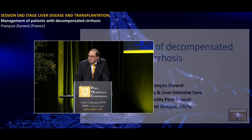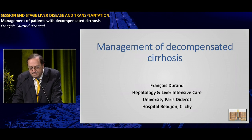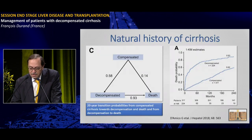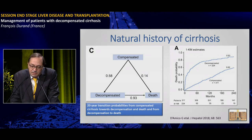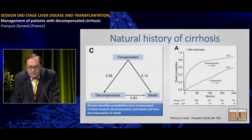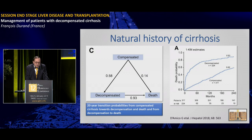Thank you for the organization committee, and a special thank for Patrick, who organized this nice meeting in Paris. I'm going to talk about decompensated cirrhosis. Decompensated cirrhosis is a severe condition with a high mortality. You can see here the rate of transition from compensated cirrhosis to decompensated cirrhosis over time, and the probability of dying is much higher in patients with decompensated cirrhosis.